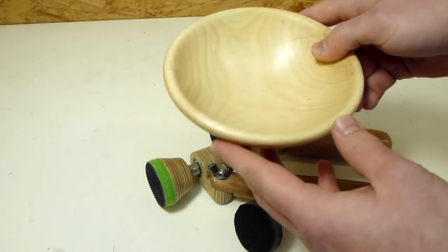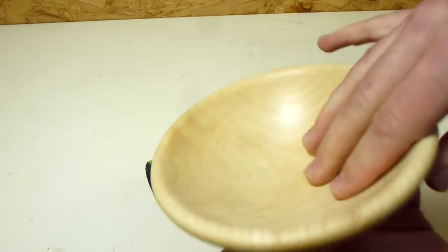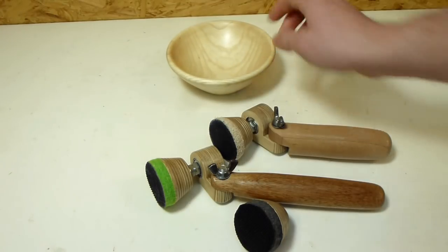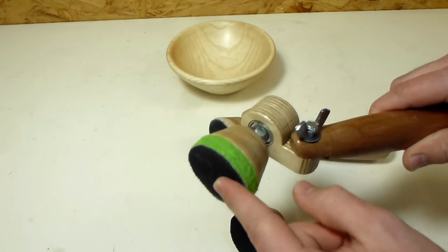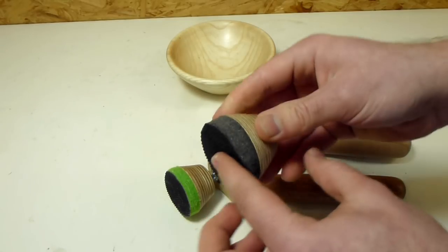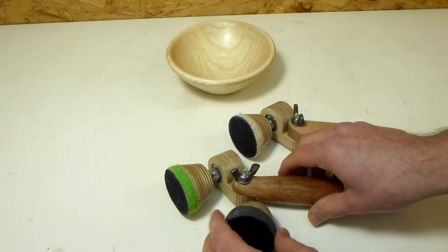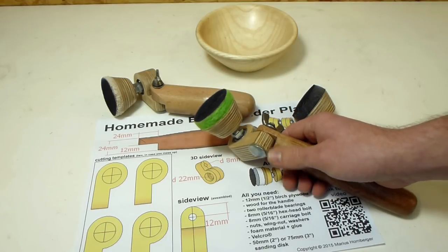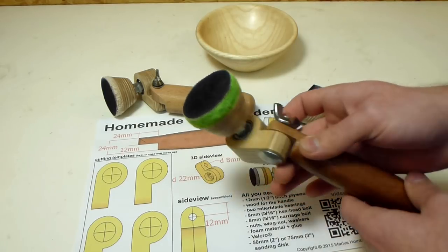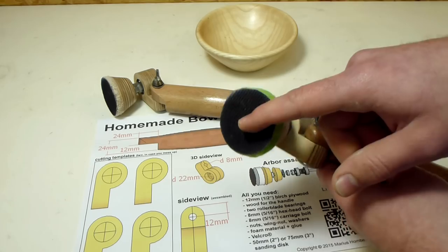I guess the result speaks for itself. As you can see these sanders do a really nice job. And they are super simple and super cheap to make. And if you make yourself multiple pads with a dense, a medium and a soft pad you are prepared for almost every sanding job on bowls. You will find a link to the free plans in the video description as well as some other links to online shops where I found the velcro, sandpaper and some more stuff.